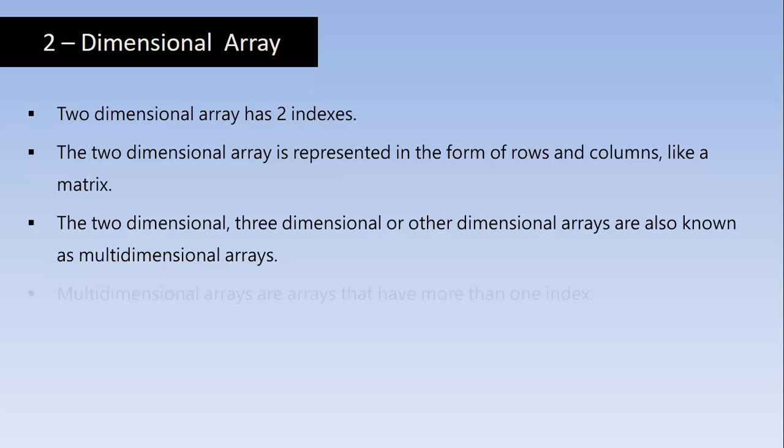2D Array is also known as multi-dimensional arrays. If you are using only 2 indexes with array variable that is called 2D Array, and you can also have multi-dimensional assigned to an array. Multi-dimensional arrays are arrays that have more than 1 index. Now let us see how to declare and initialize that array.